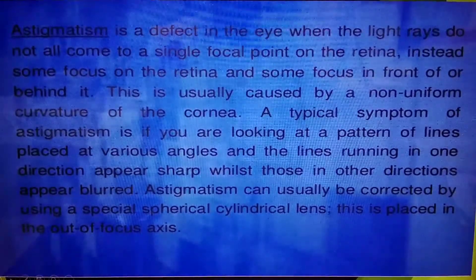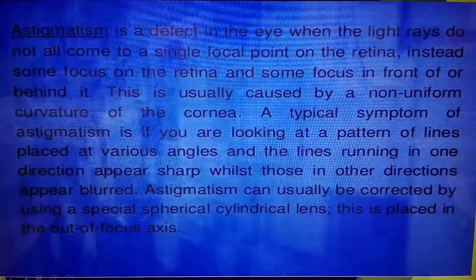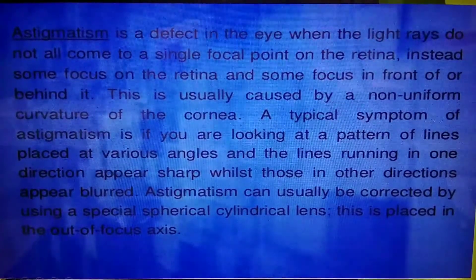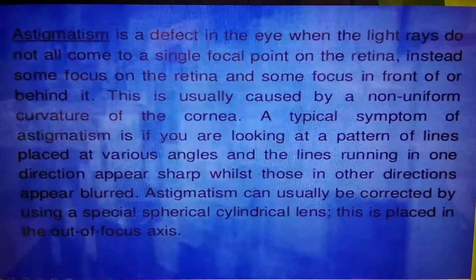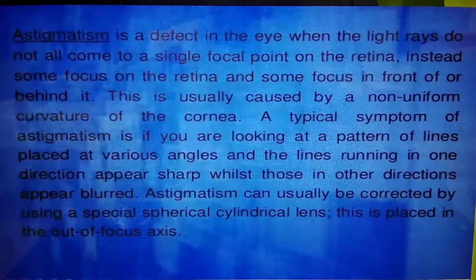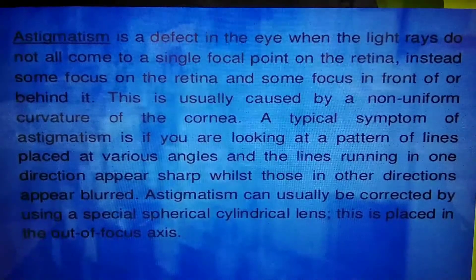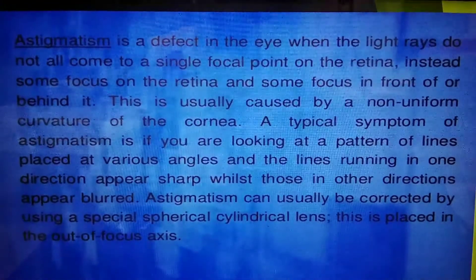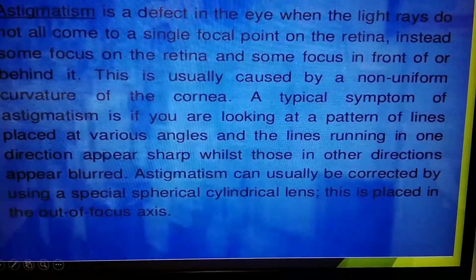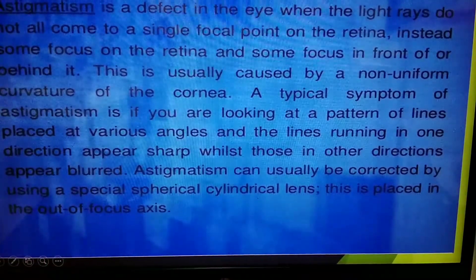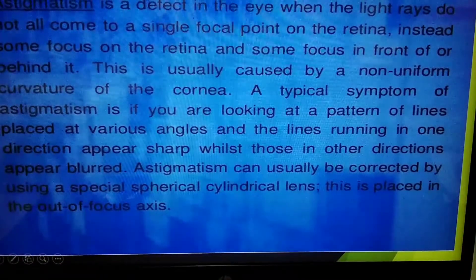A typical symptom of astigmatism is if you are looking at a pattern of lines placed at various angles, and the lines running in one direction appear sharp whilst those in other directions appear blurred. Astigmatism can usually be corrected by using special spherical cylindrical lenses placed in the out-of-focus axis. For example, if you consider a graph paper, an astigmatic person can see either vertical lines or horizontal lines clearly, but the other lines will be blurred.